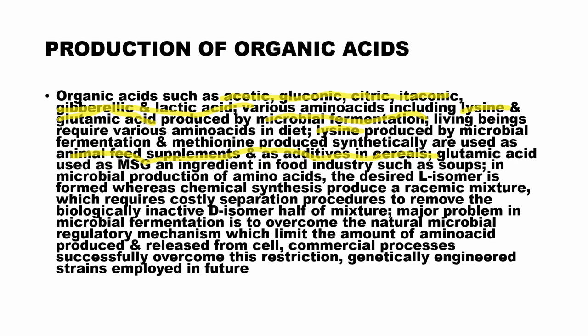Similarly, we can use these things as additives in cereals. Glutamic acid is used as MSG — monosodium glutamate — an important ingredient in the food industry such as soups. MSG is the trade name of glutamic acid. We can buy glutamic acid in the market as MSG; it is an artificial flavor enhancer used in soups and many other products.